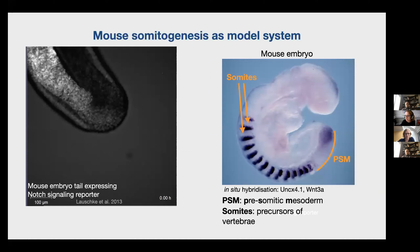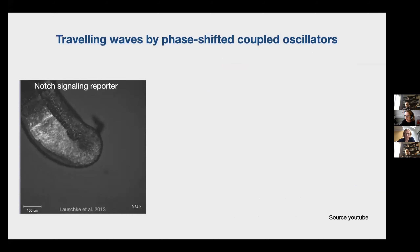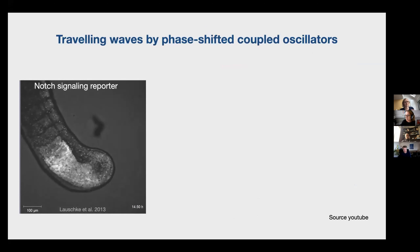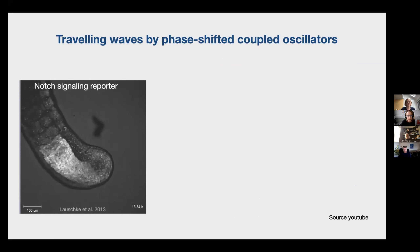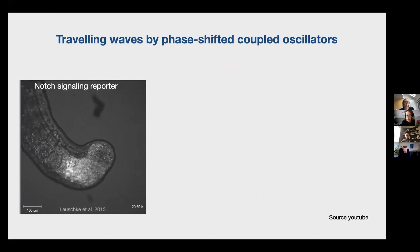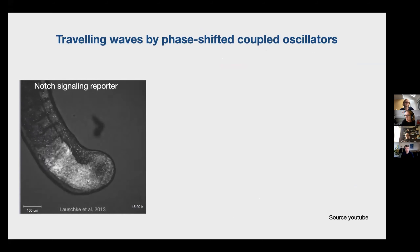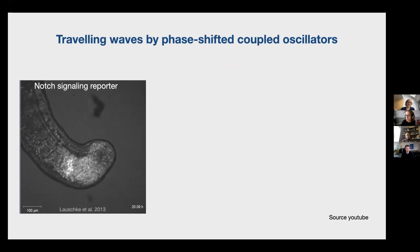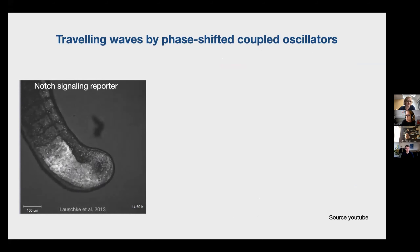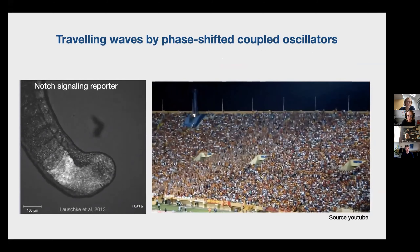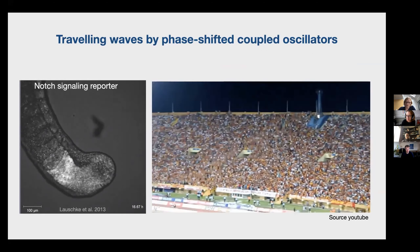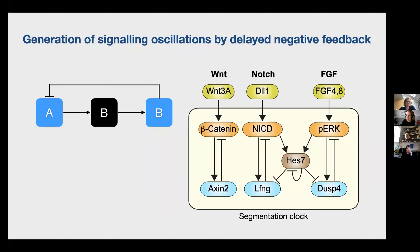One more background point: when you see these traveling waves, it's not that something is physically transported. Each of these cells is an independent oscillator, and because cells are coupled to each other and slightly phase shifted, you see the emergence of traveling waves in the tissue. This is very reminiscent of waves in a football stadium, where each person is an independent oscillator. It is thought that these oscillations are generated by a delayed negative feedback system, and it's not just Notch signaling that oscillates but also Wnt and FGF signaling.